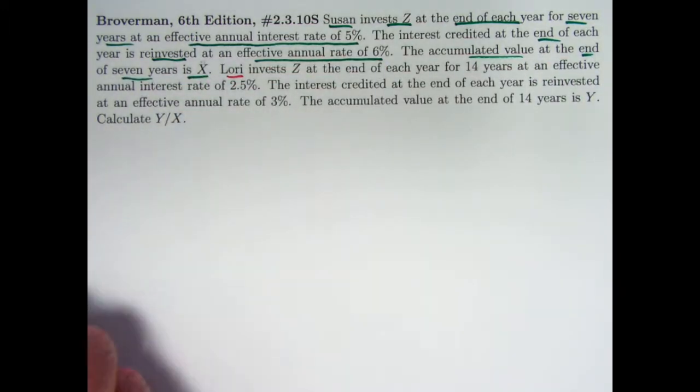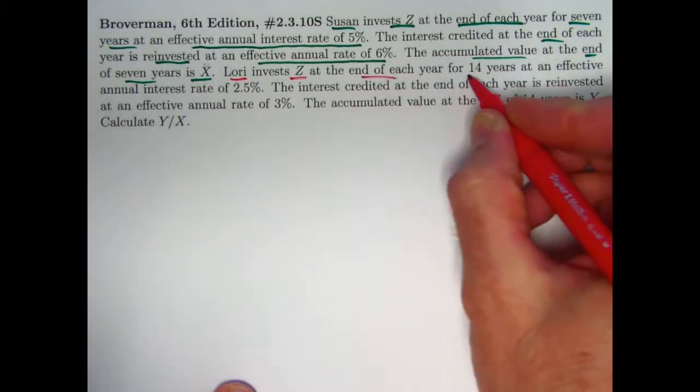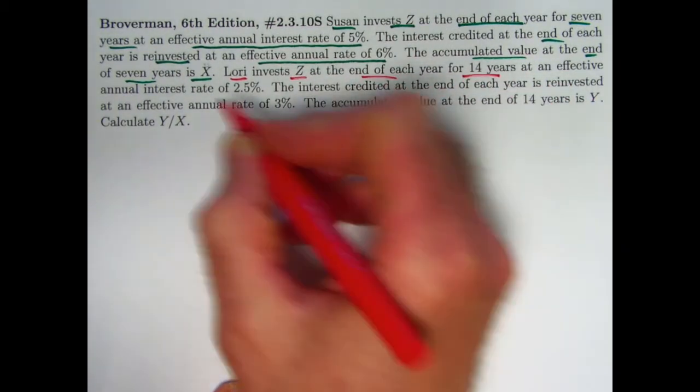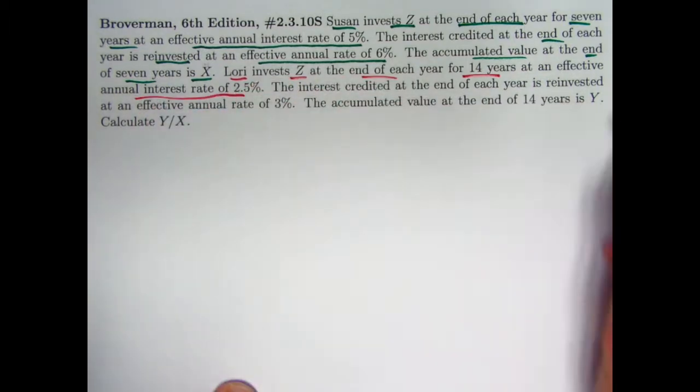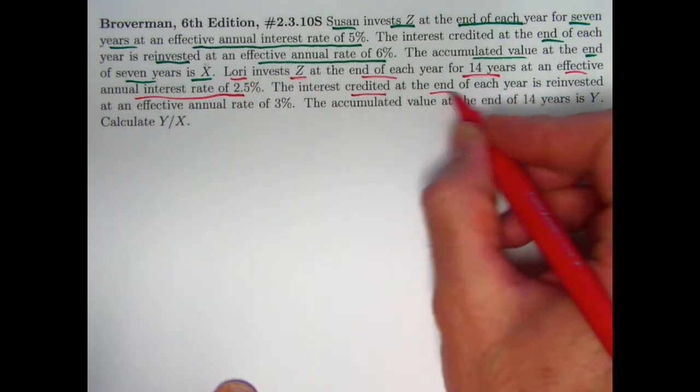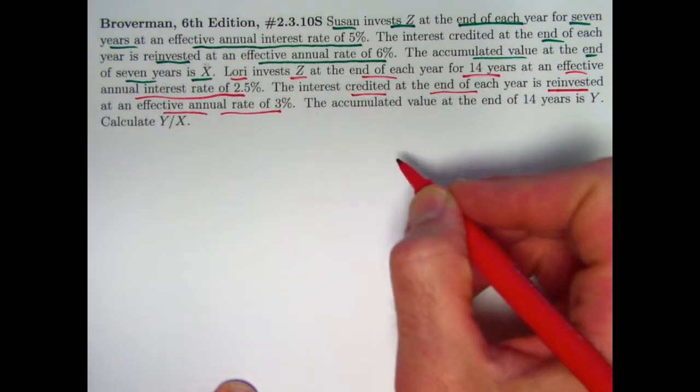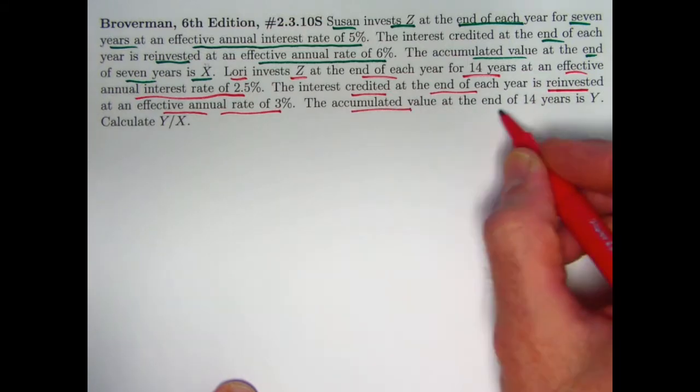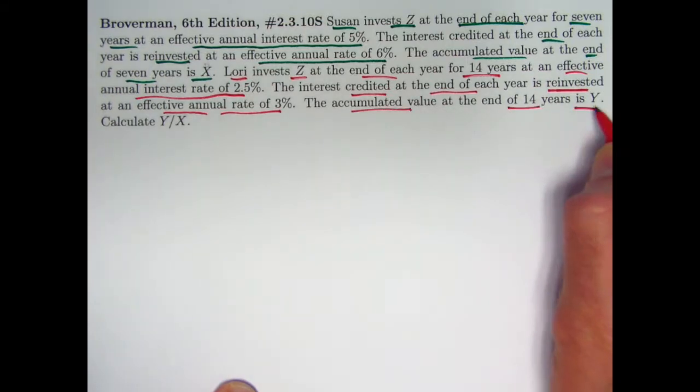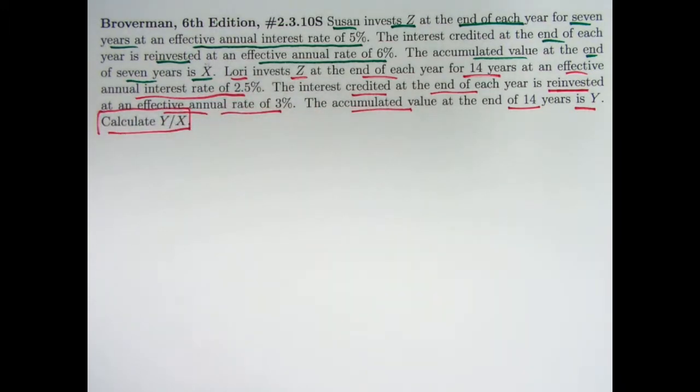How about Lori? Lori invests the same amount, Z, at the end of each year but for 14 years in a different account with a lower interest rate of 2.5%. She also reinvests. The interest credited at the end of each year is reinvested in a new account with an effective annual rate of 3%. The accumulated value of her account at the end of 14 years is Y. The goal is to calculate the ratio Y divided by X of these two amounts.